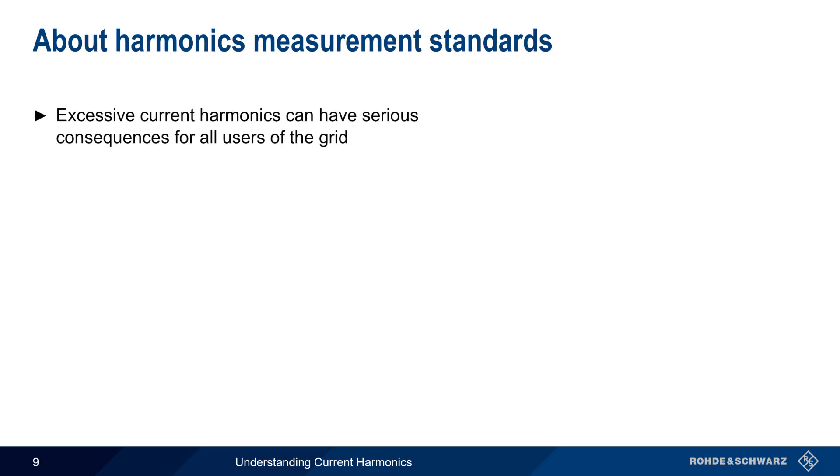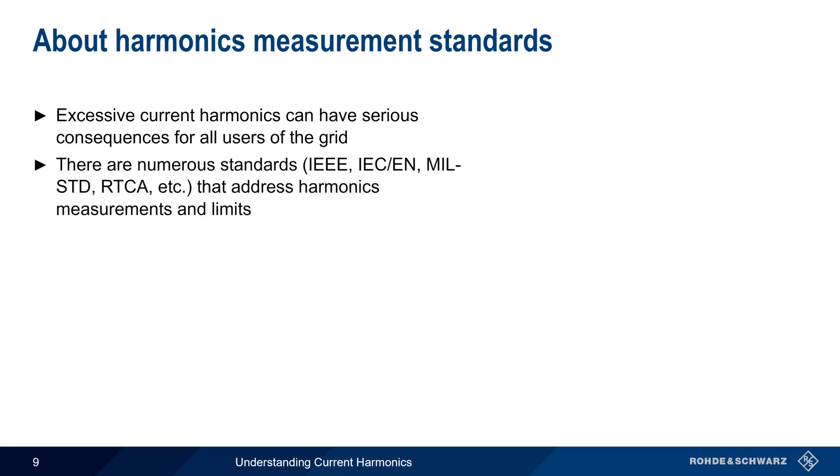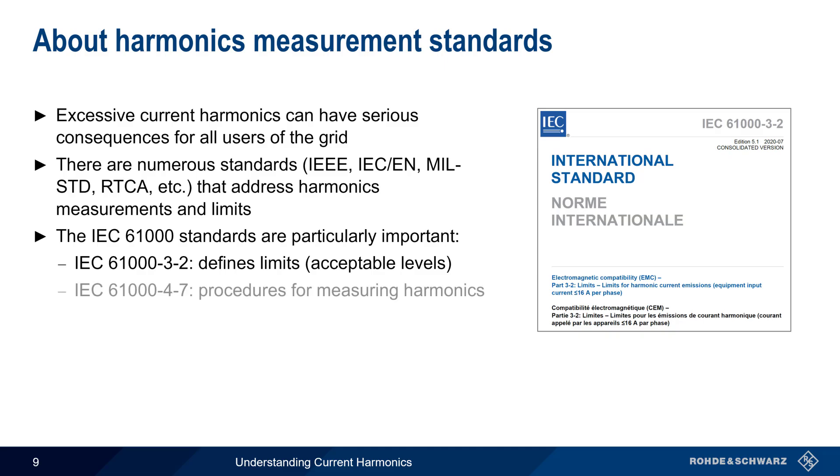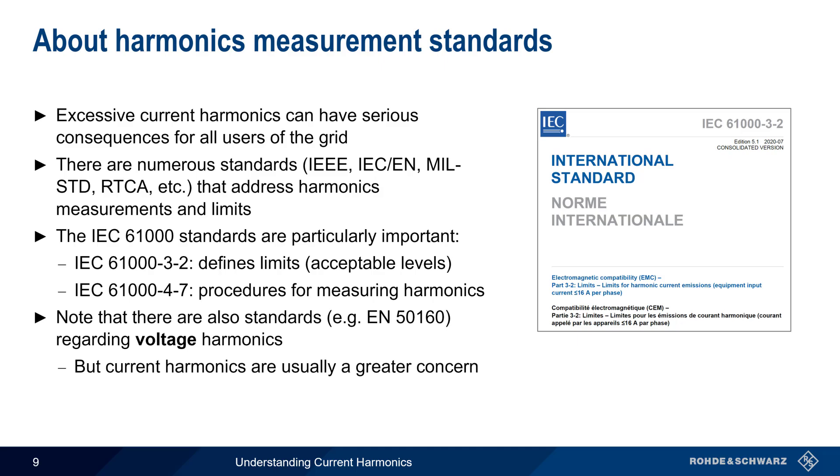Since excessive current harmonics can have serious consequences for not just the attached load, but for all users of a grid, numerous national and international standards have been developed to define how harmonics should be measured, as well as to specify acceptable limits for harmonics. Several IEC 61000 series standards are particularly important with regard to harmonics. One of these, IEC 61000-3-3, defines the actual limits or acceptable levels for harmonics. Another, IEC 61000-4-7, specifies the procedures to be used when measuring harmonics. Note that there are also standards, such as EN 50160, for voltage harmonics. But most standards address current harmonics, since these tend to be the greater concern.